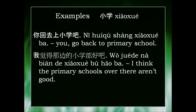This could also be singular, because xiaoxue means primary school or primary schools in Chinese — there's no distinction between singular and plural. So 我觉得那边的小学不好吧 could mean I think the primary schools over there aren't good, or the primary school over there isn't good. Thanks for watching.